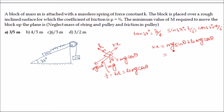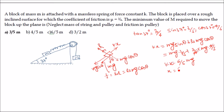Substituting sin θ = 3/5 and cos θ = 4/5, and μ = 3/4: kx = mg(3/5) + (3/4)mg(4/5) = 3mg/5 + 3mg/5 = 6mg/5. So kx = 6mg/5, which gives x = 6mg/(5k).